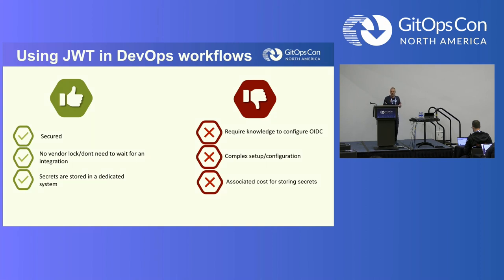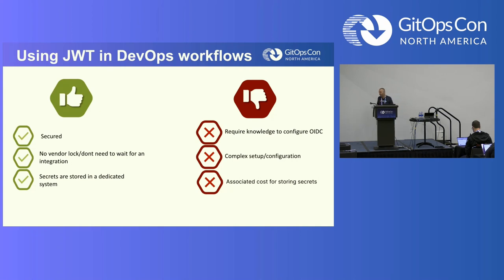The benefits of using JWT in a DevOps workflow: first, it's far more secure because you're using a short-lived ID token. Even if the token gets leaked, it has an expiration time of five minutes, so there's probably not a lot an attacker can do in five minutes. You have no vendor lock-in — you don't need to wait for anyone to build an integration for you; you can build it right now. And secrets are stored securely in a dedicated system, so you gain all the features and benefits that the secret provider brings you.